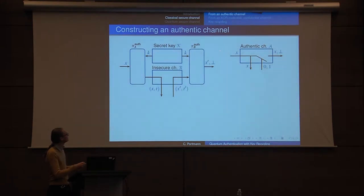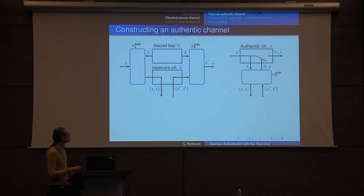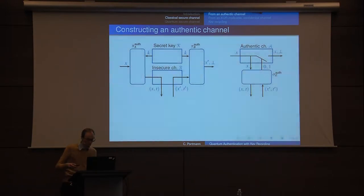In some sense, this represents a bound on what power we're willing to give Eve. We're willing to give Eve a copy of the message and allow her to decide if Bob gets it or not. To argue security, we need to find a simulator that constructs the real interface given access only to the idealized interface. If we can find such a simulator, it means the real system is certainly not more powerful and doesn't give any more information to Eve than the idealized one does.